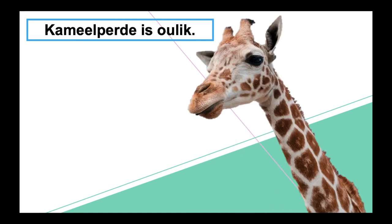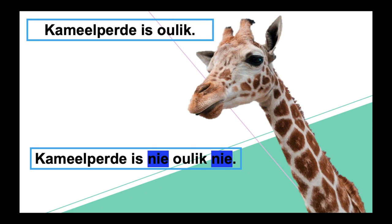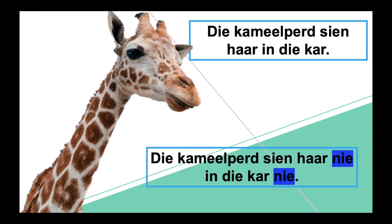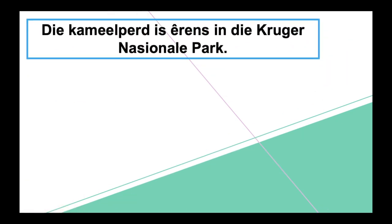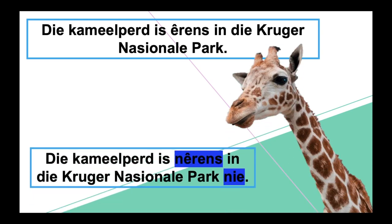Change this one: 'Kameelpaarde is oulik.' Answer: 'Kameelpaarde is nie oulik nie.' And this one: 'Die kameelpaard sien haar in die kar.' Answer: 'Die kameelpaard sien haar nie in die kar nie.' Next: 'Die kameelpaard is êrens in die Krüger Nasionale Park.' Answer: 'Die kameelpaard is nêrens in die Krüger Nasionale Park nie.'